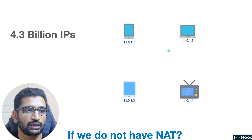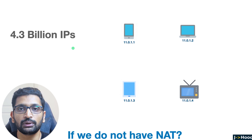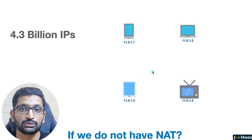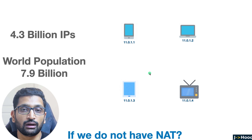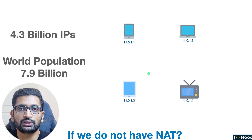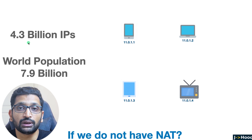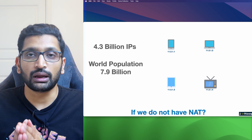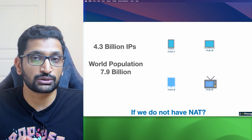With IPv4 there was only a possibility of 4.3 billion public IP addresses. Considering the devices we have in our households and the world population of approximately 7.9 billion, if each household has 3, 4, or at least 5 devices with public IP addresses, we would consume all 4.3 billion IPs, resulting in IP address exhaustion — a problem we are already facing.